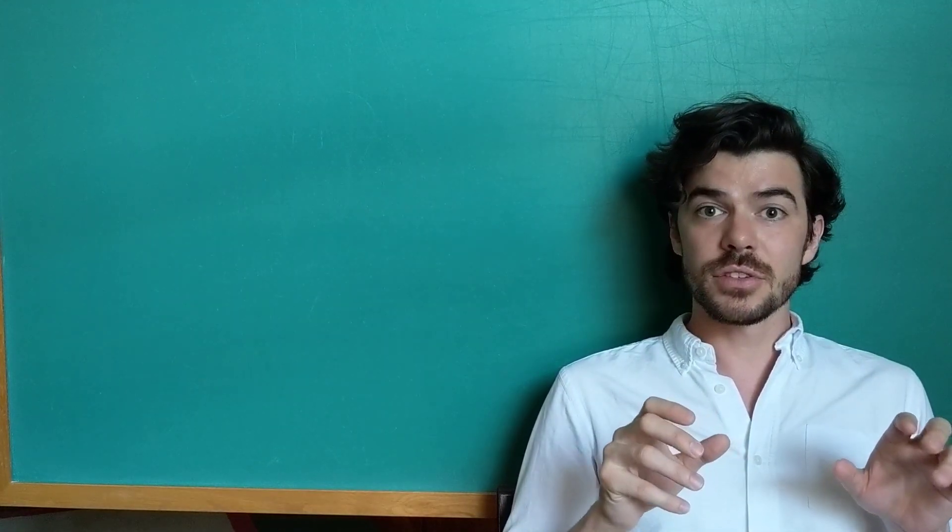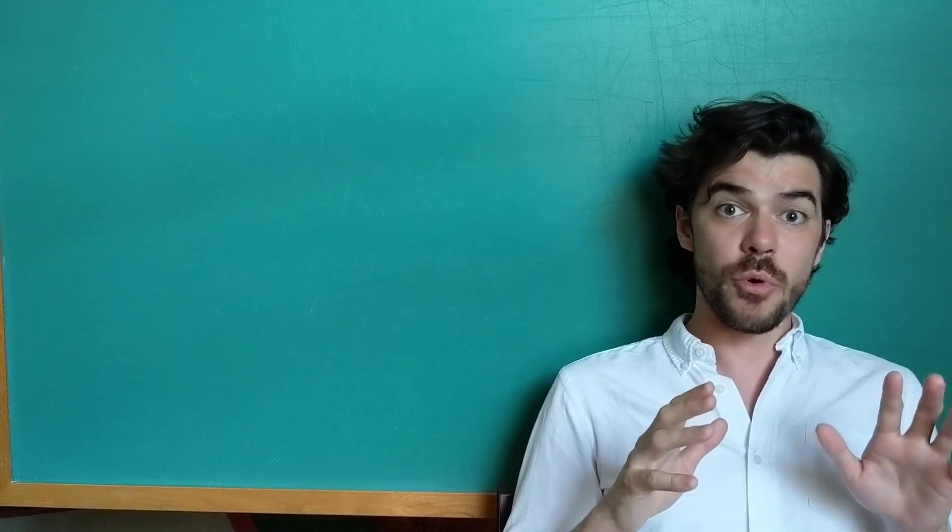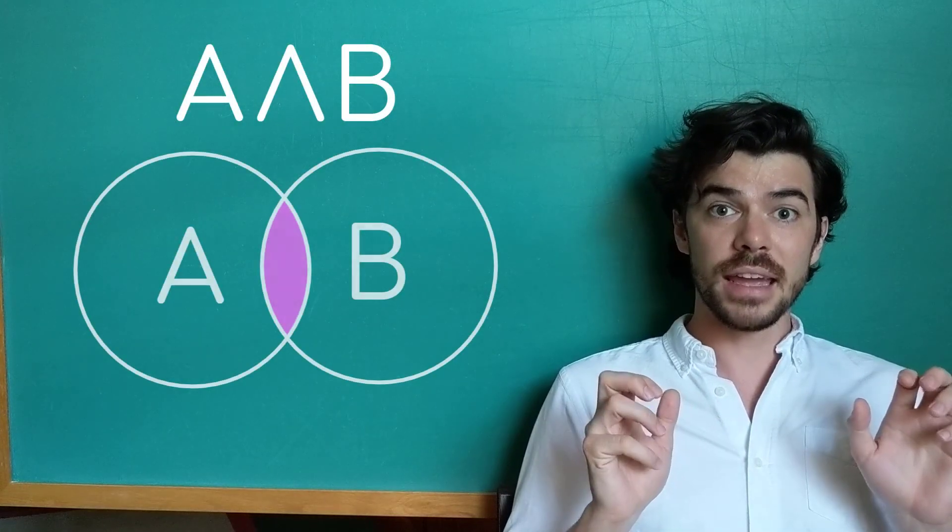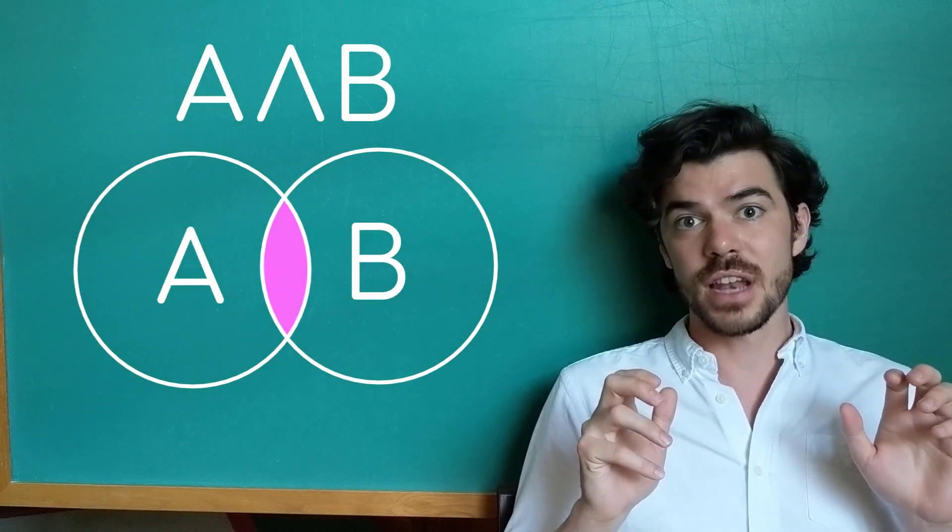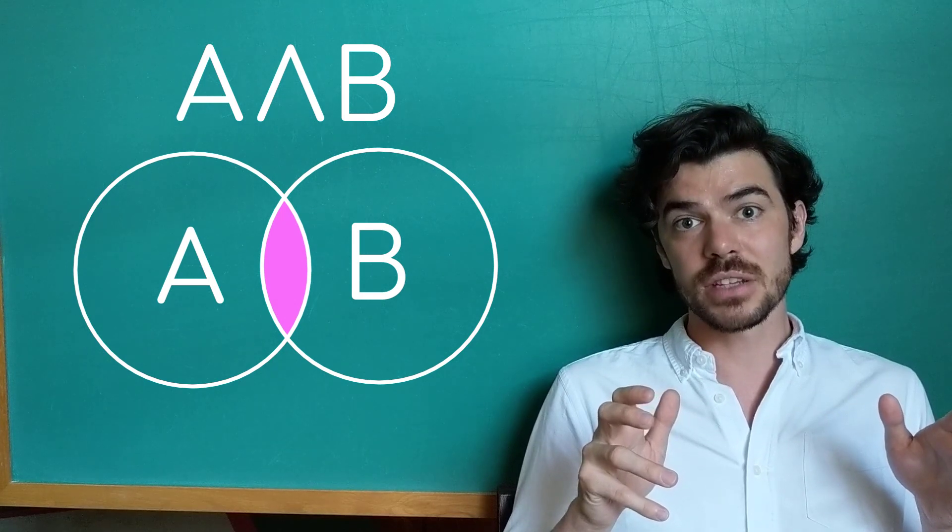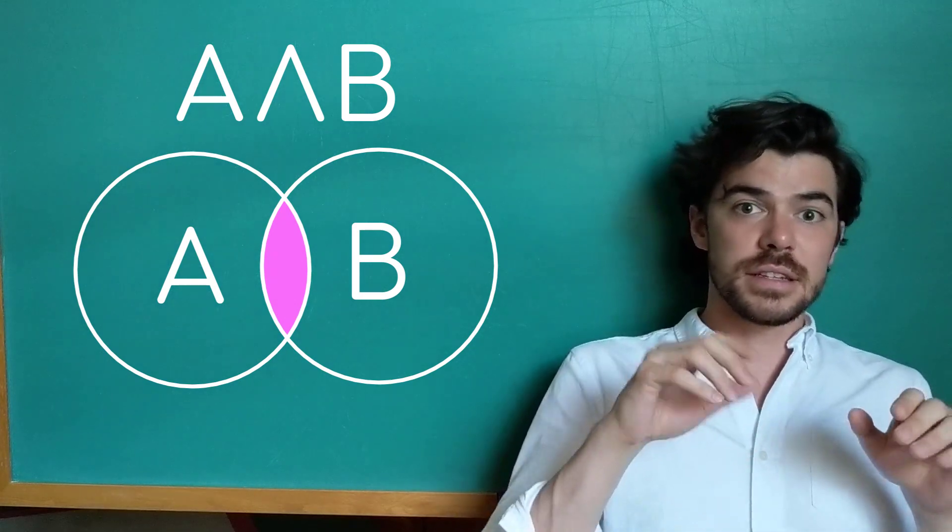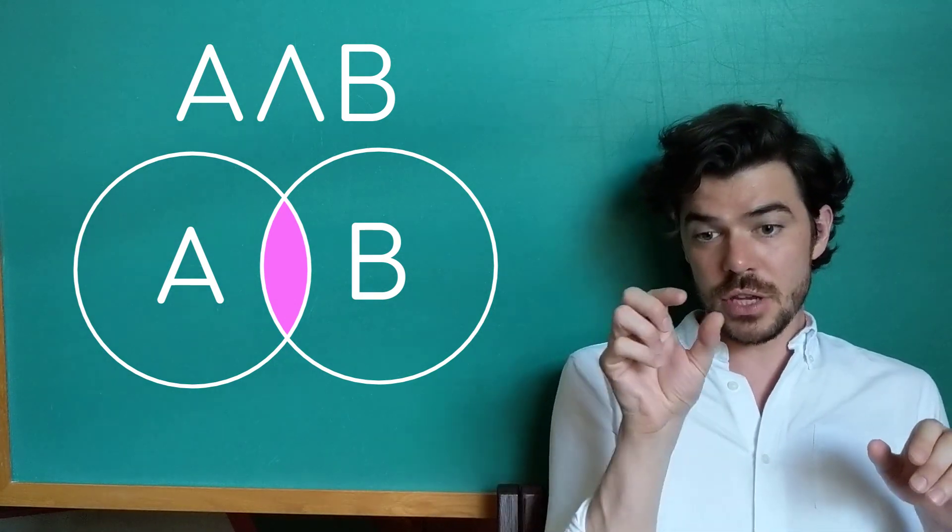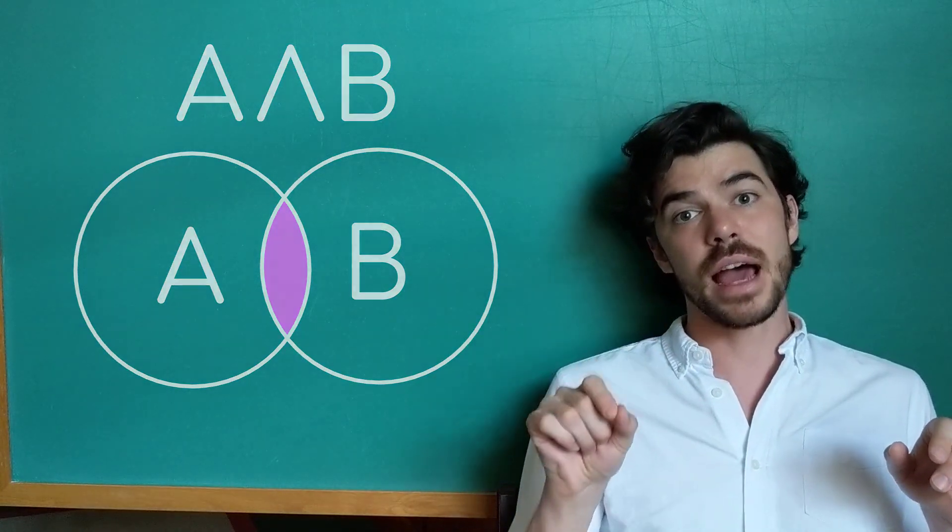The overlap is now what we're going to zero in on for conjunction. A and B. Don Quixote is a knight and Don Quixote is famous. And here we see that the area that's true is just the area that's shared between A and B, the overlap.